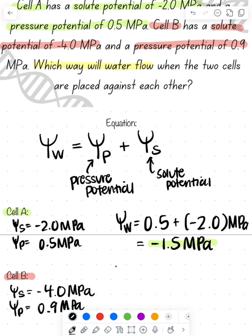If we substitute this into the equation, the water potential is 0.9 plus negative 4 megapascals, which gives us negative 3.1 megapascals.